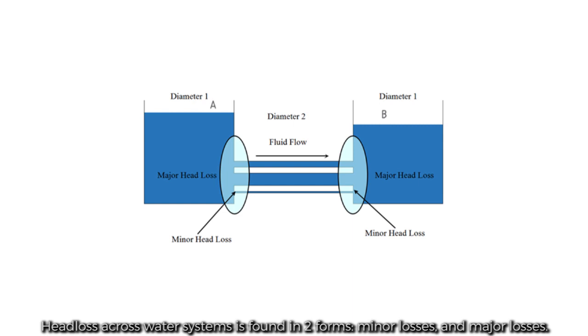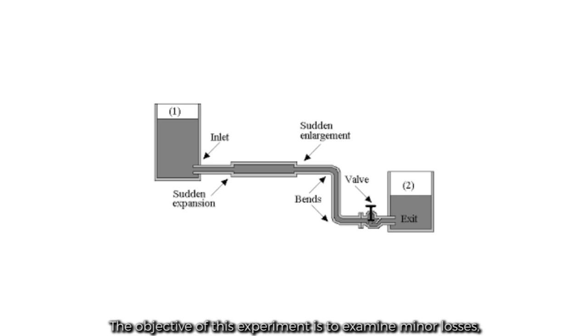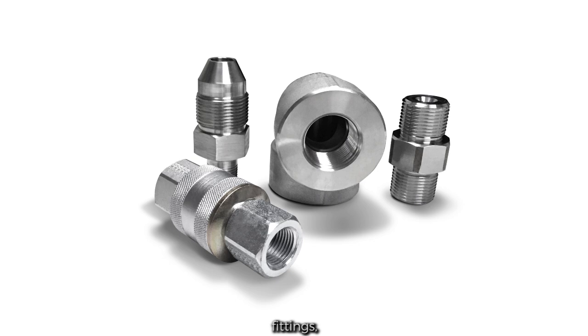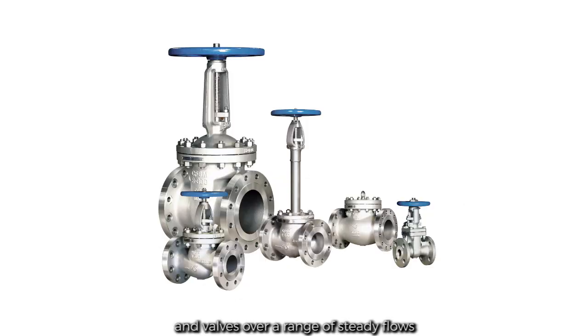Head loss across water systems is found in two forms: minor losses and major losses. The objective of this experiment is to examine minor losses, which are caused by bends, fittings, and valves over a range of steady flows.